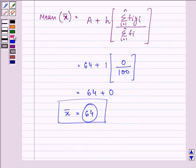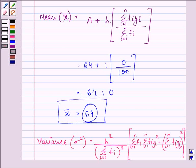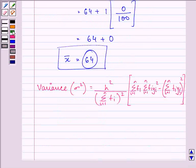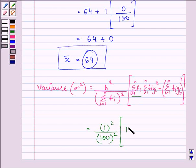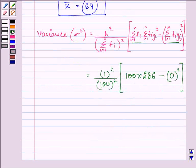Now proceed to find out the variance. This is the formula which is known to us. On substituting the value, we have h as 1, summation of fi as 100, so it will be 100 the whole square, into summation fi yi square is 100 multiplied by 286, minus summation fi yi was 0, so its whole square will again give us 0.